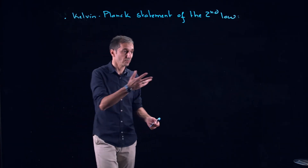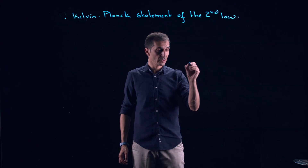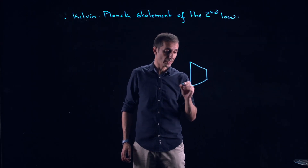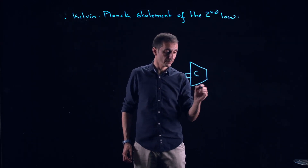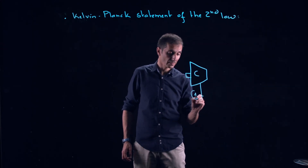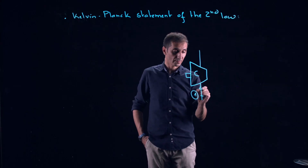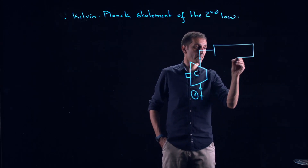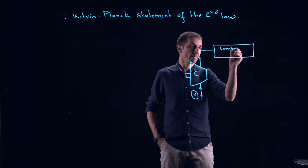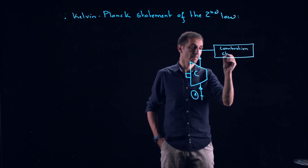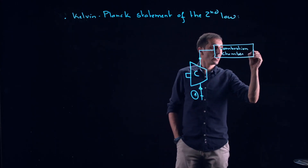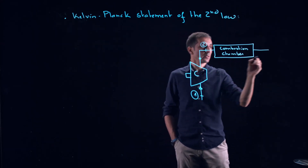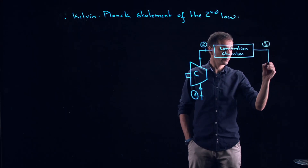Let us now apply this to a heat engine. I will be sketching here a diagram for a heat engine — a gas turbine or a Brayton cycle. We have a compressor; here we have state one. Through the compressor and then we have a combustion chamber where we are providing heat. After this we reach the maximum temperature and pressure, so this is state two, and we reach state three where maximum temperature and pressure.